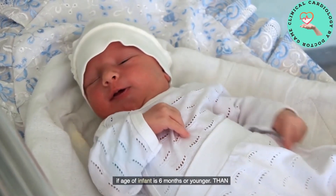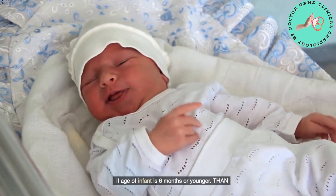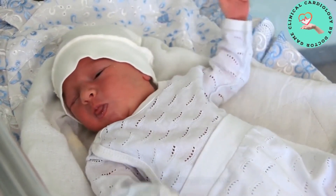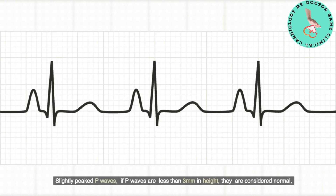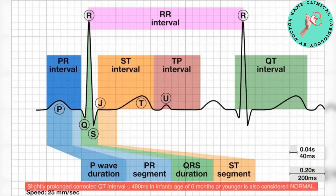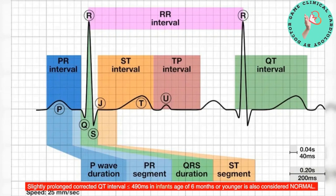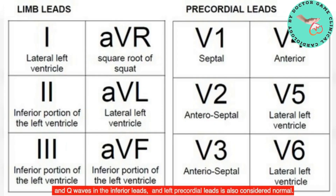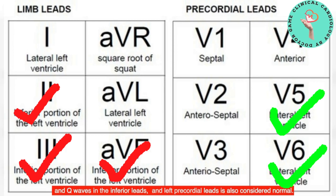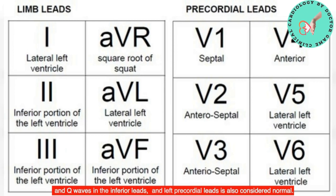If the infant's age is six months or younger, slightly peaked P waves less than three millimeters in height are considered normal. A slightly prolonged corrected QT interval of less than or equal to 490 milliseconds in infants six months or younger is also considered normal. Q waves in the inferior leads and left precordial leads are also considered normal.